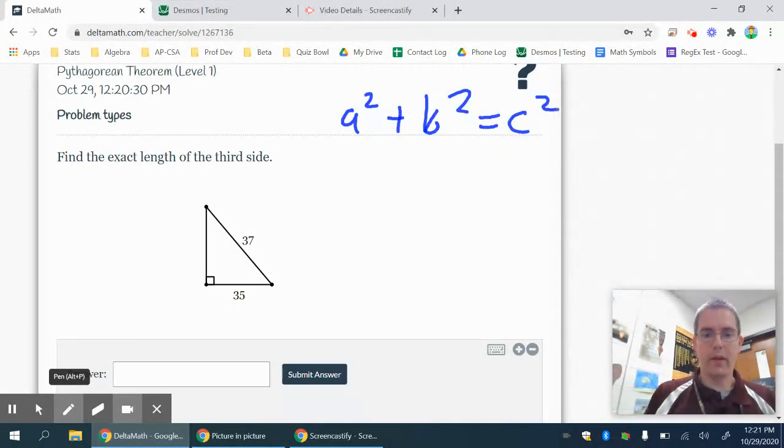So that is your Pythagorean Theorem, and what I need to do is I need to solve this thing by the largest side, the hypotenuse, the one opposite the right angle, always goes in for C.